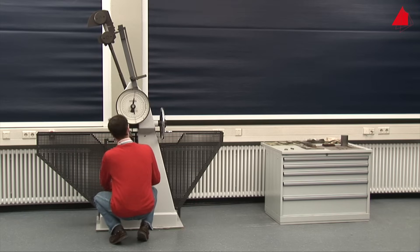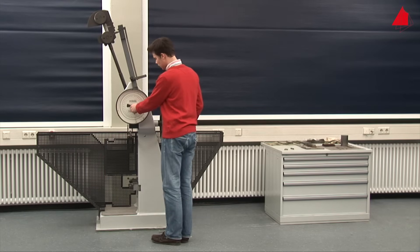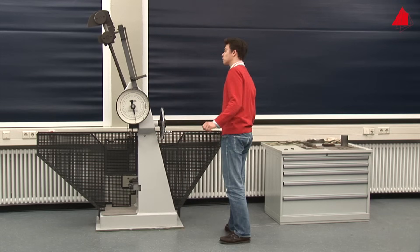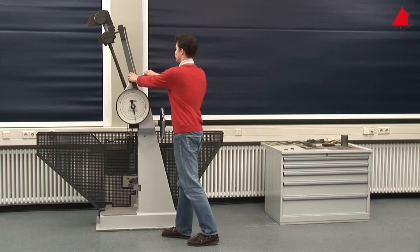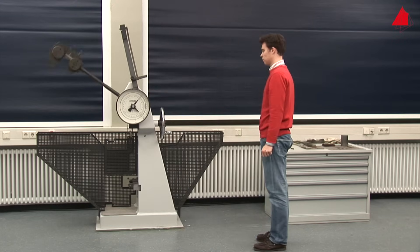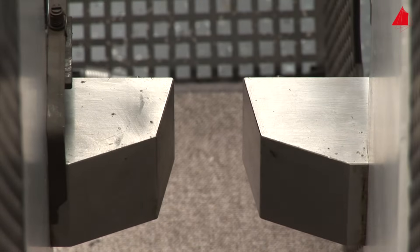Next, he turns the drag indicator downwards again and checks that everything is prepared correctly. Perfect. The test can begin. The pendulum is released. It swings downwards and hits the specimen with its rounded hammer pin.